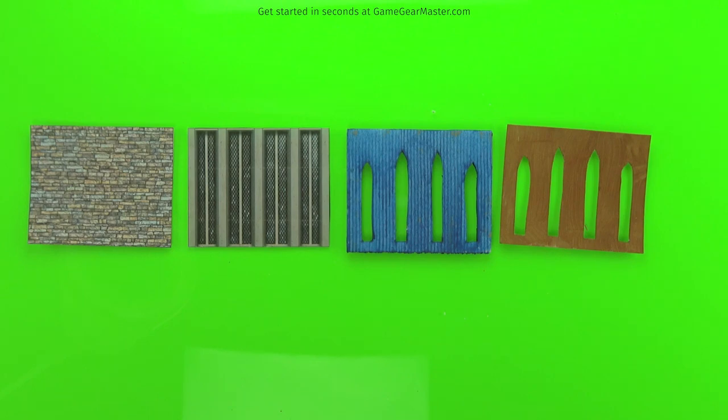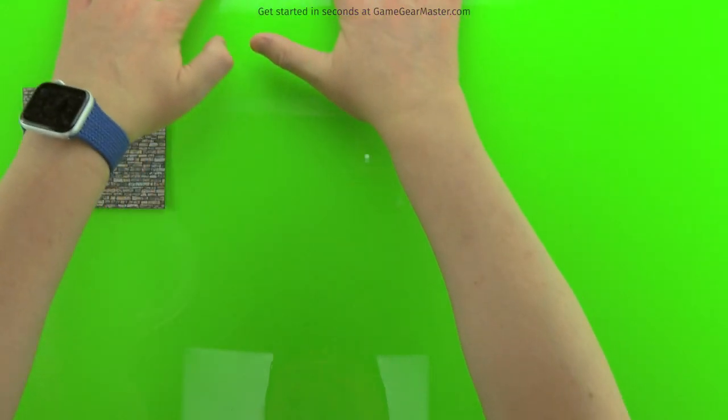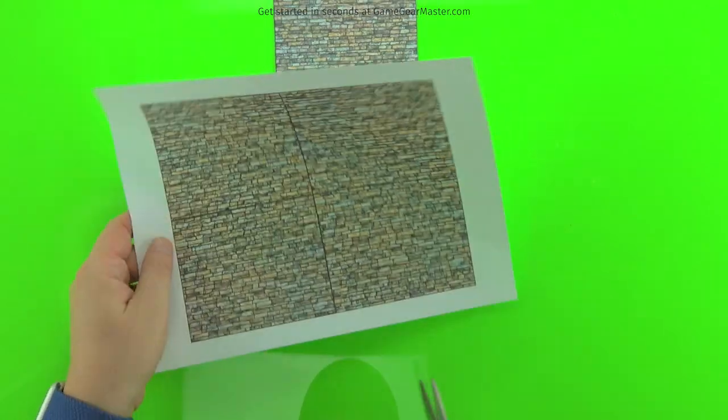And I haven't even started talking about insertable doors. That'll be another video. So we're going to start off with the paper ones. This is the easiest and most straightforward one. You basically just print out the texture from the Terraino castles and catacombs texture file and you cut out the piece.